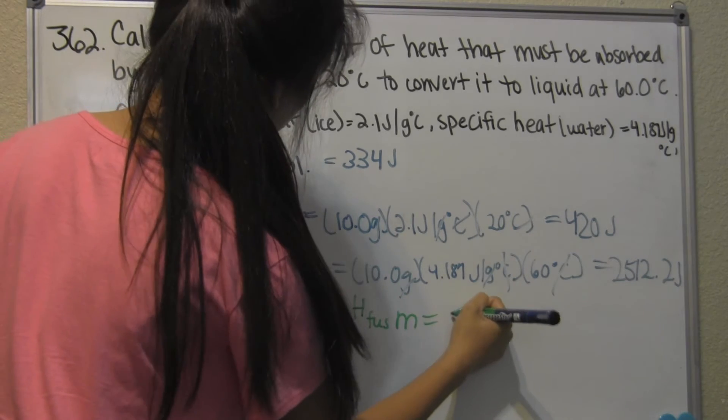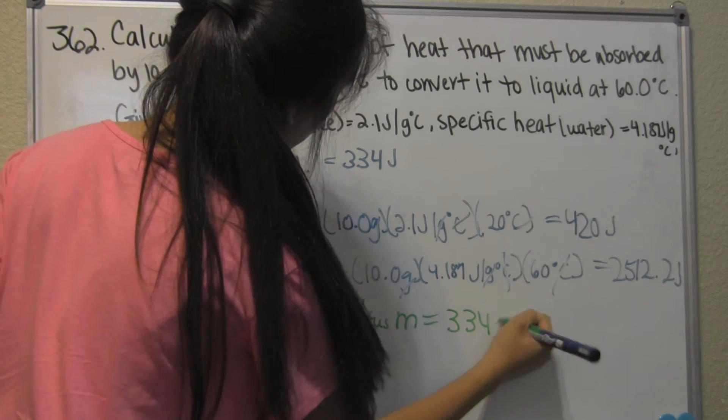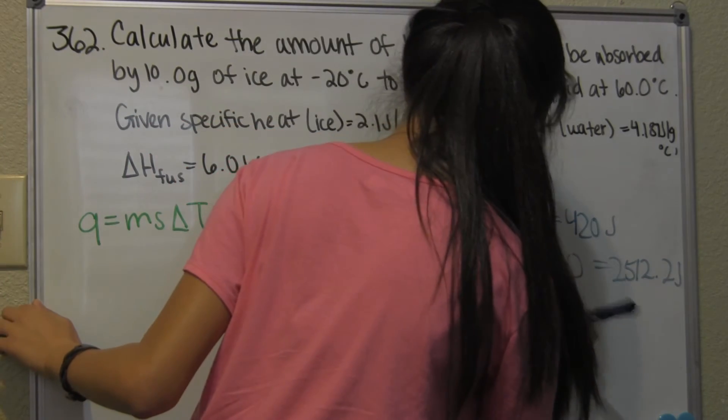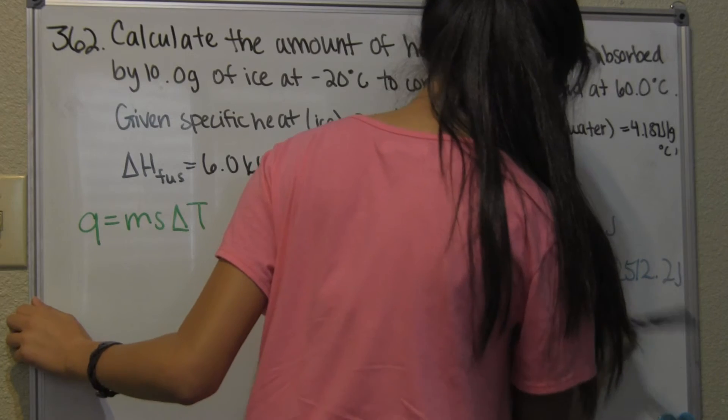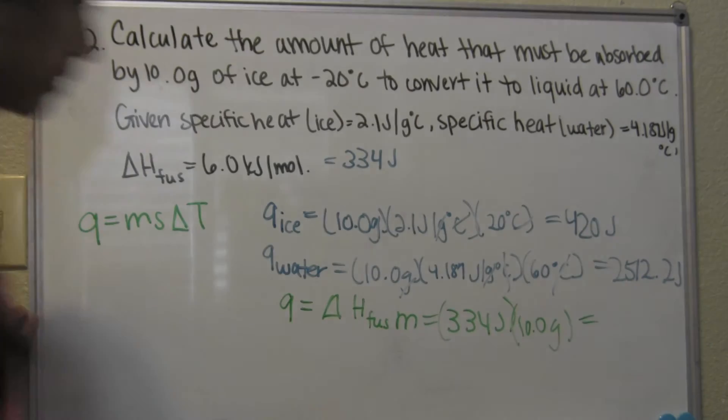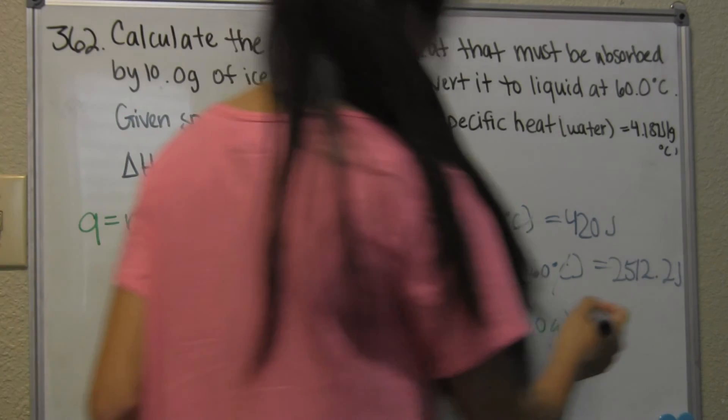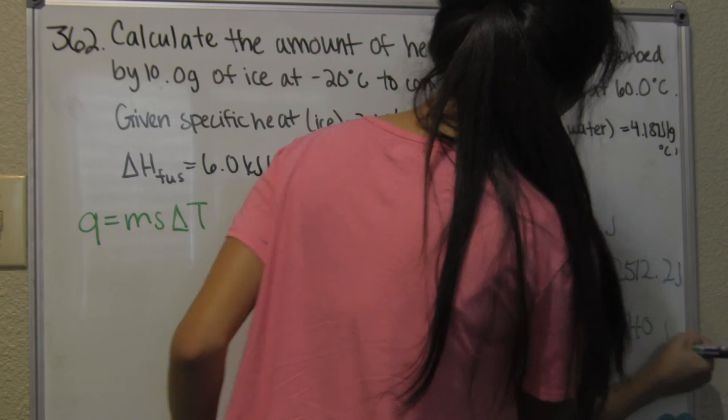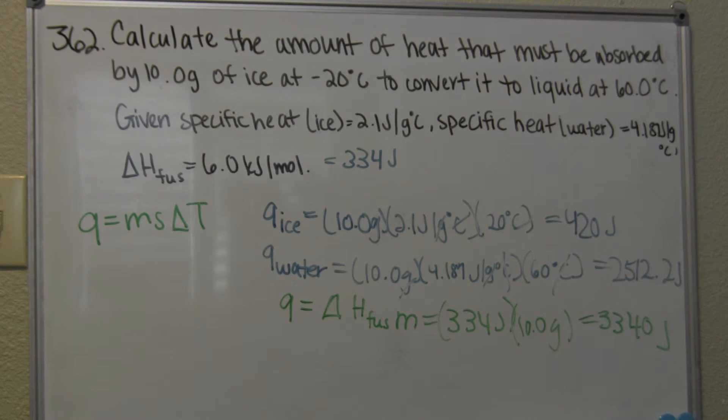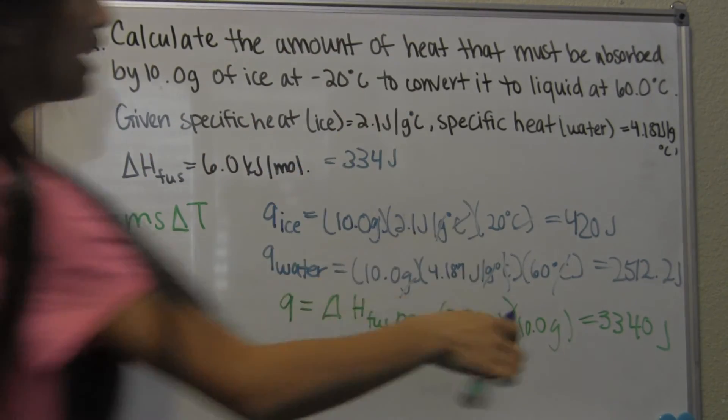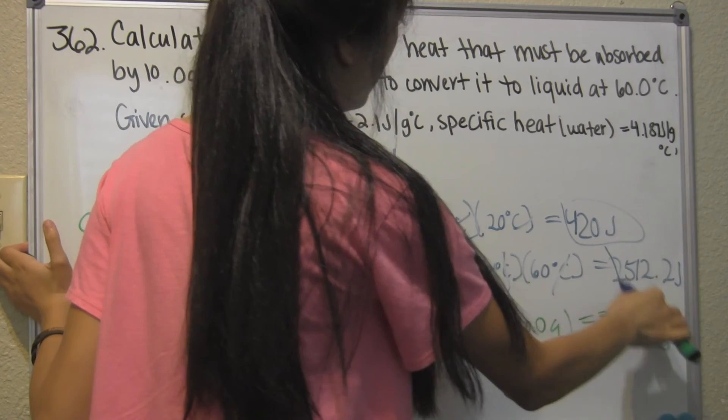That's going to be 334 joules, times 10.0 grams. From there, you'll see that we get 3,340 joules, and all you have to do now to find the amount of heat that must be absorbed by ice to make it liquid, is add all of these values up.